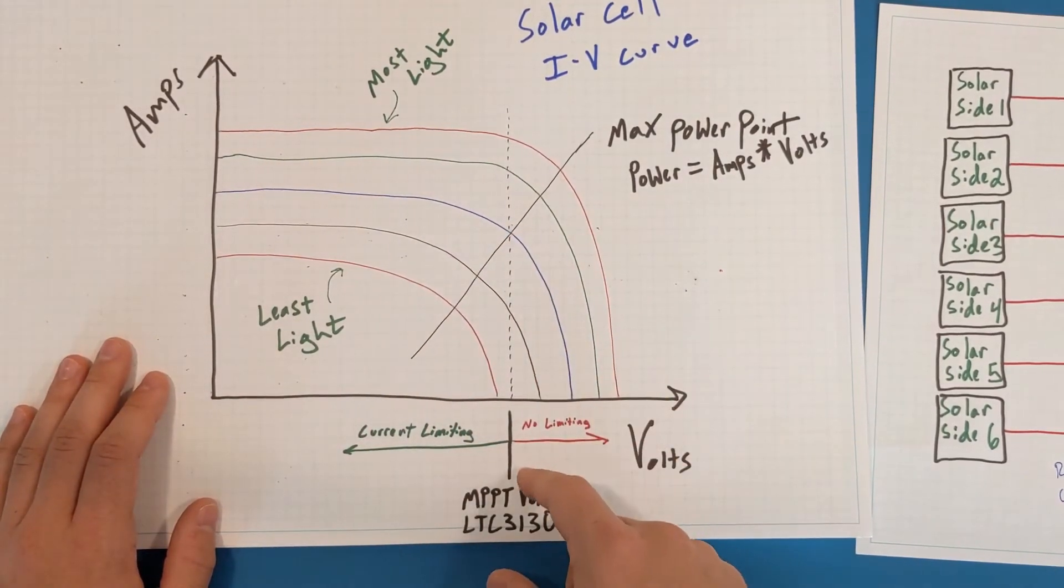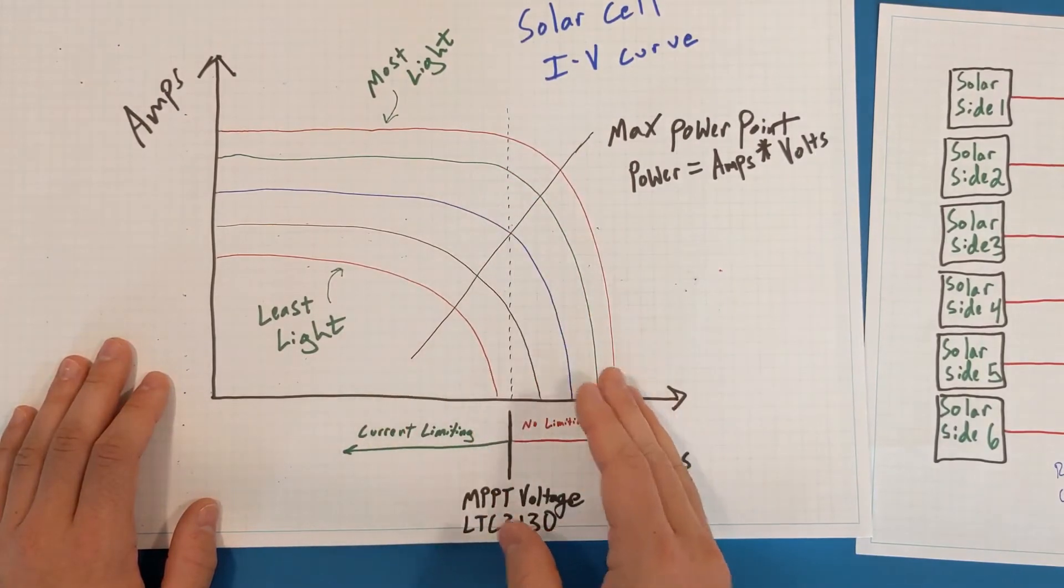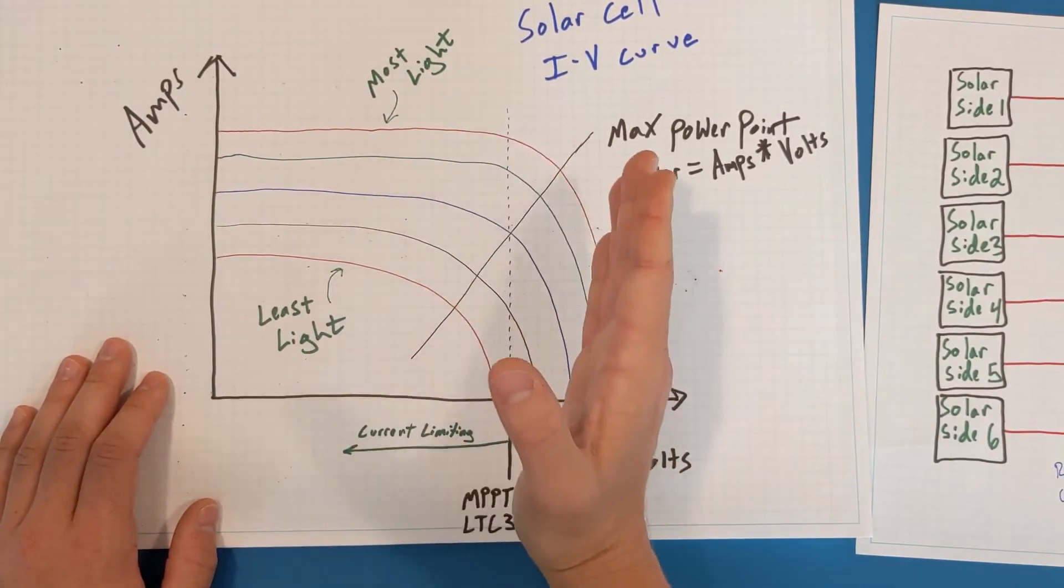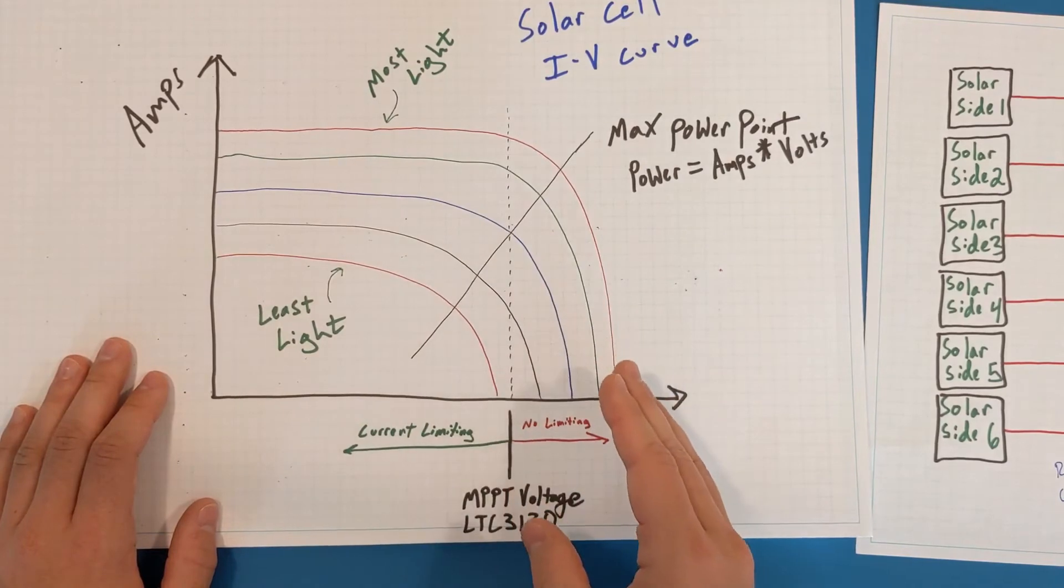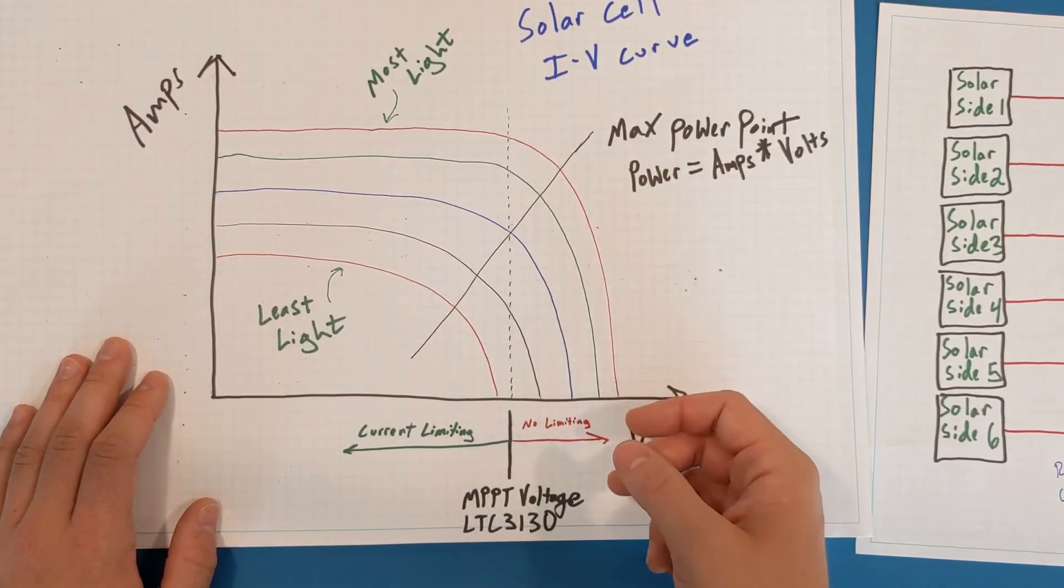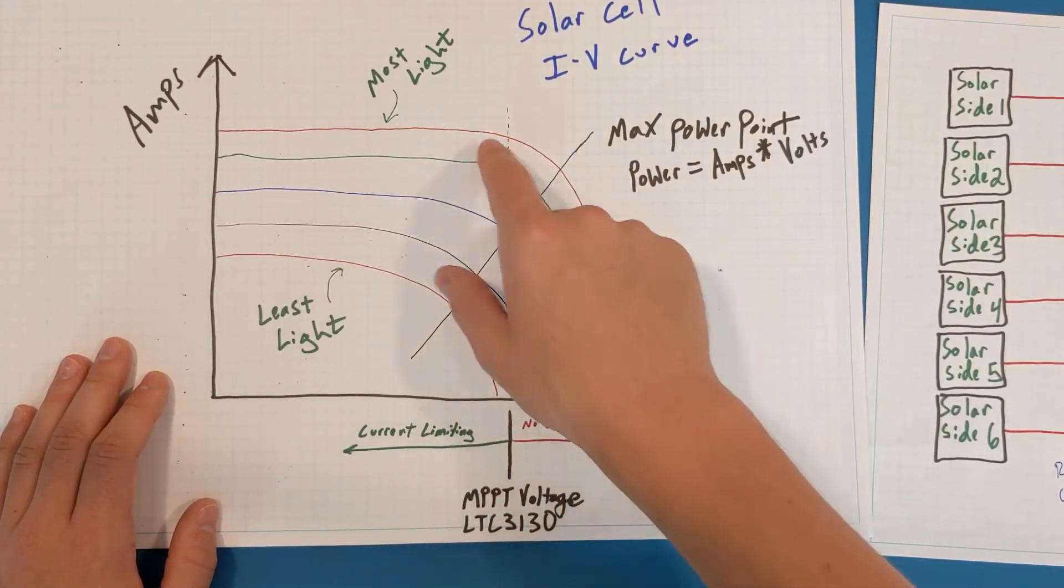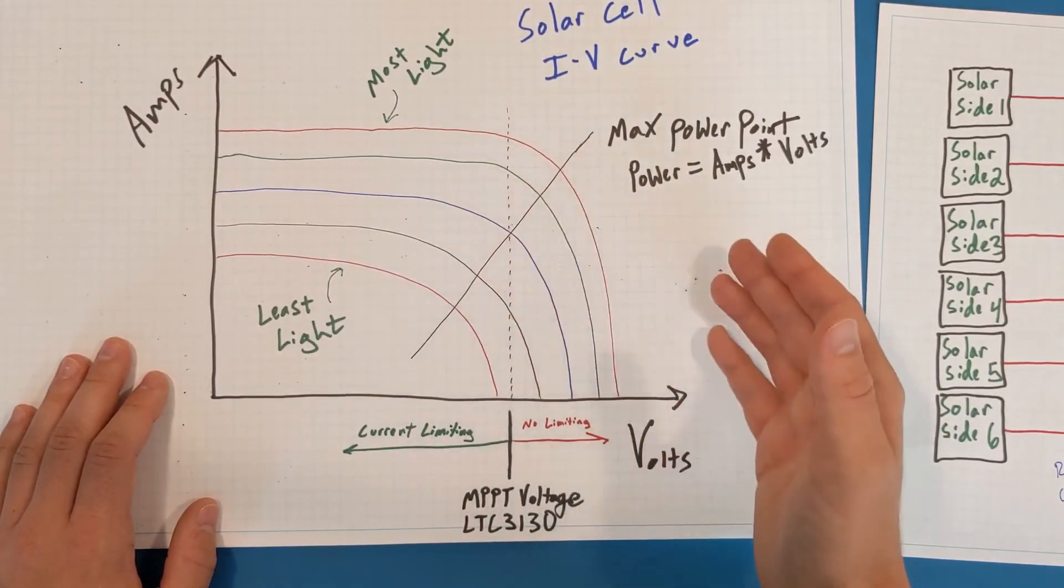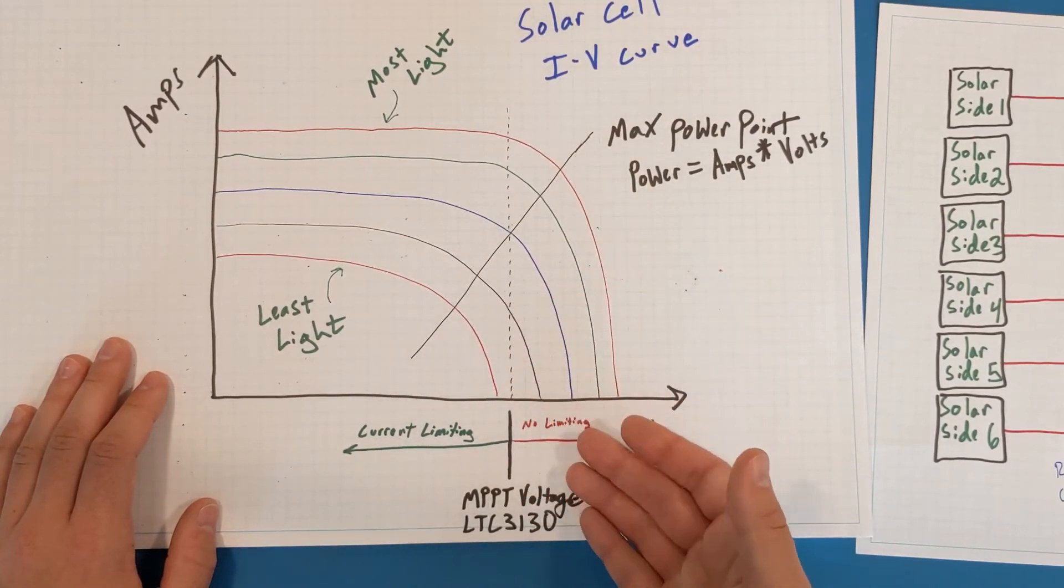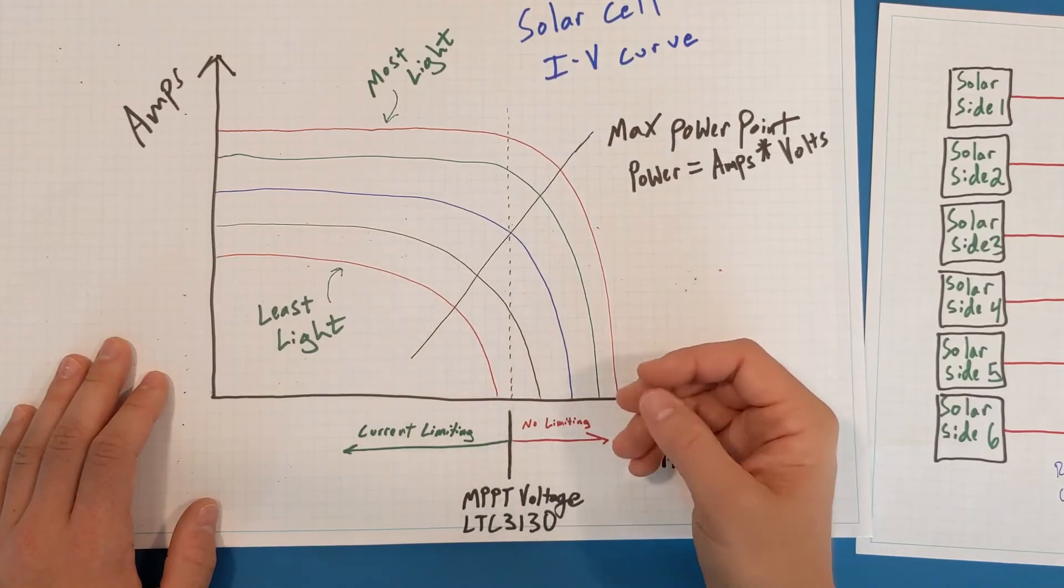So I think there's a trick with setting this voltage where you don't actually want to set it at the maximum power point. You want to set it a little bit to the left of the maximum power point, because if the solar cell ends up producing more power than you currently need, that's okay. The voltage will float higher or over to the right, and there won't actually be any current limiting. It's only when you're under load when you really need to care about the current limit.